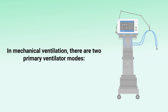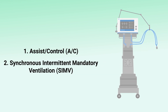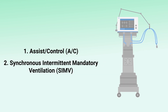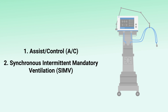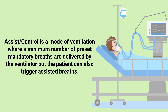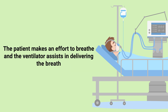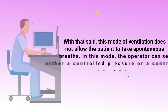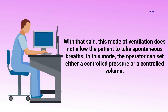In mechanical ventilation, there are two primary ventilator modes: assist control and SIMV. For this video, we're focusing only on assist control. It's a mode of ventilation where a minimum number of preset mandatory breaths are delivered by the ventilator, but the patient can also trigger assisted breaths — the patient makes an effort to breathe and the ventilator assists in delivering the breath. This mode does not allow the patient to take spontaneous breaths.